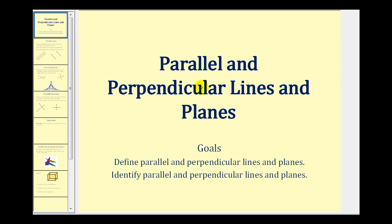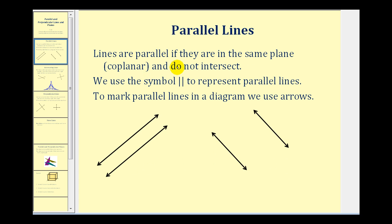Welcome to a lesson on parallel and perpendicular lines and planes. Lines are parallel if they are in the same plane, or coplanar, and do not intersect. Here we see two sets of parallel lines. We can use this symbol with two vertical bars to represent parallel lines, and to mark parallel lines in a diagram we use arrows.